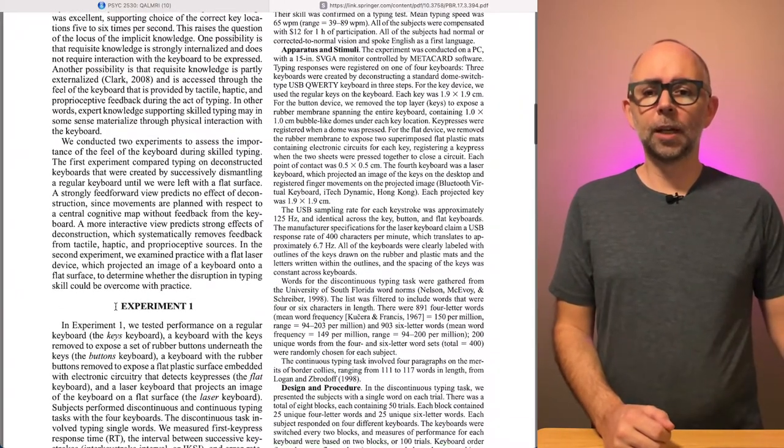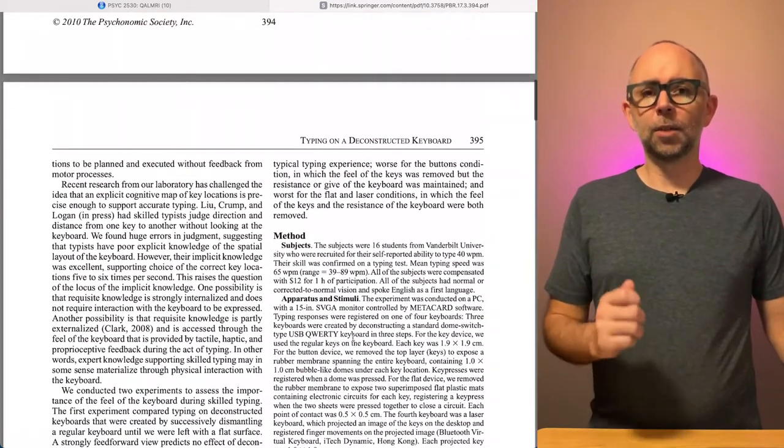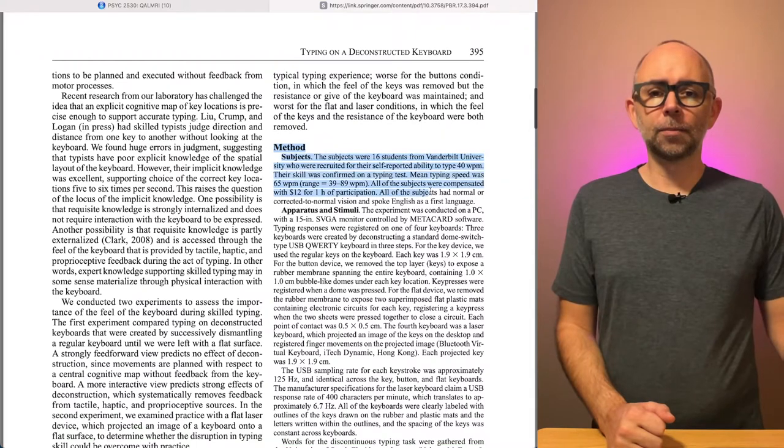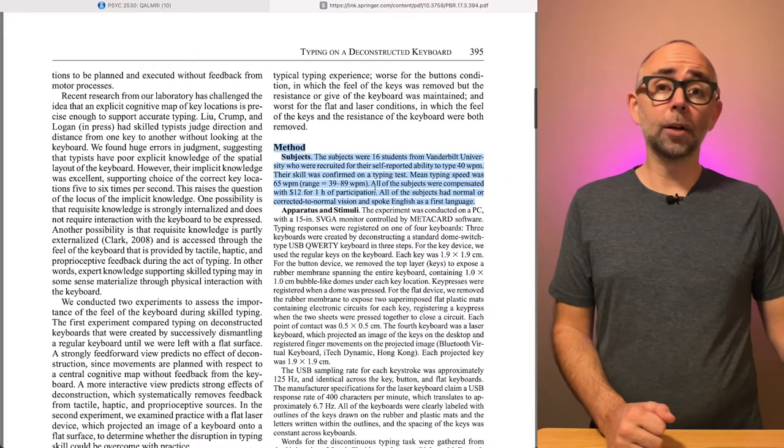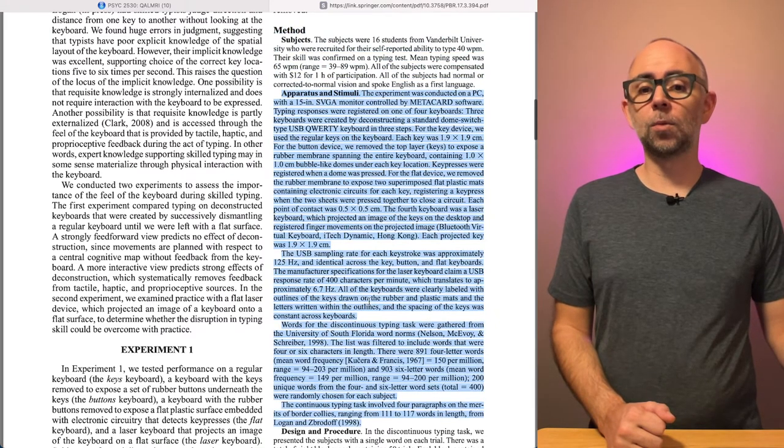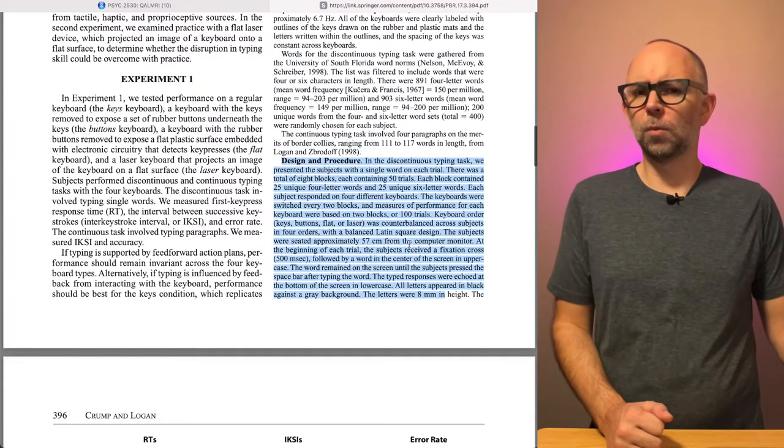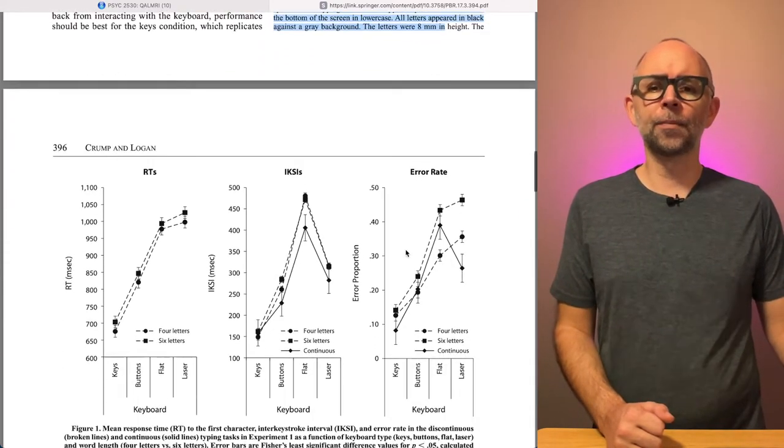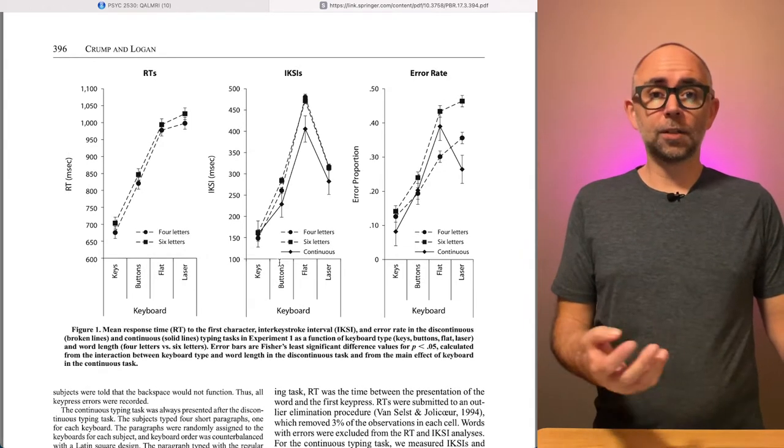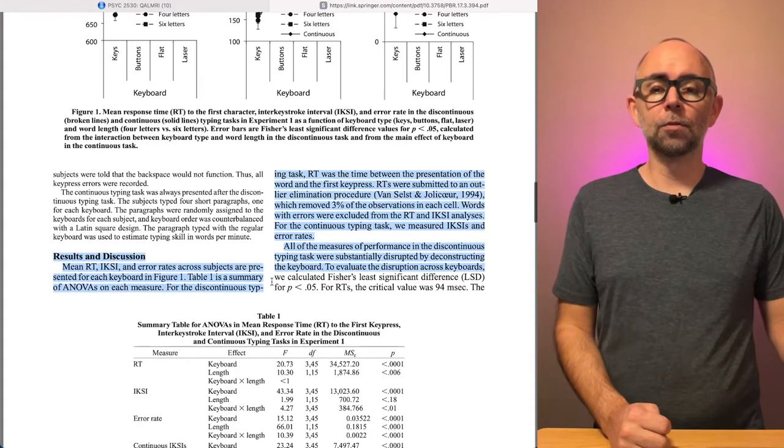Then we see an Experiment 1 section. There's a little paragraph after that that explains the details of Experiment 1. And then we have a Method section, tells us about who participated in this experiment, what kind of tools and apparatus and design were used, what kind of task was used, what were people doing in this task. After the methods are explained, we now see some results. So, this is the findings of the study.